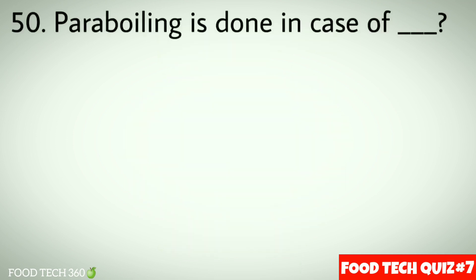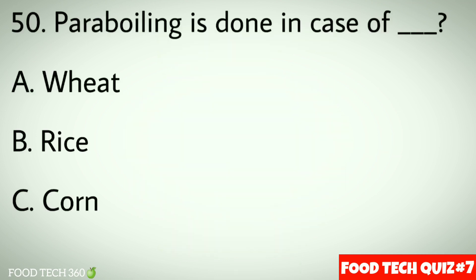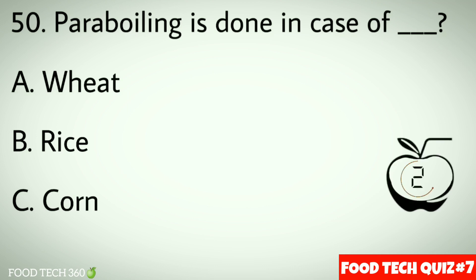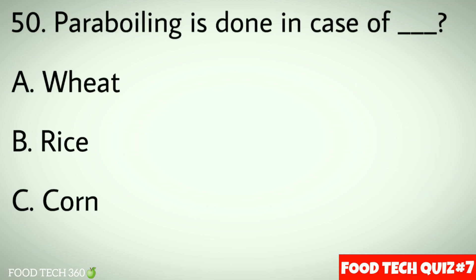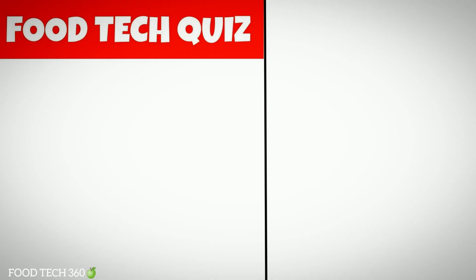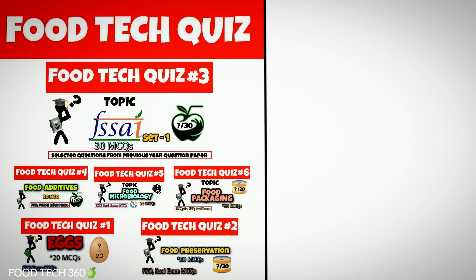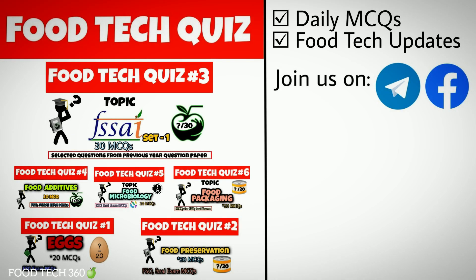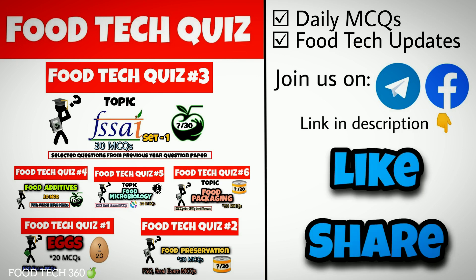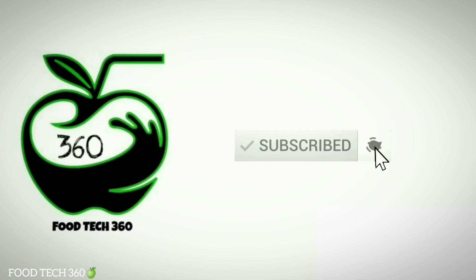Question number 50: Parboiling is done in case of — options: a) Wheat, b) Rice, c) Corn. Correct answer: b) Rice. If you have missed our previous Food Tech videos, we have linked them in the description box. For daily MCQs and other updates, you can join us on our Telegram channel. If you found this video helpful, like this video and share it with your friends. To see more videos like this, please subscribe to this channel and hit the bell icon.